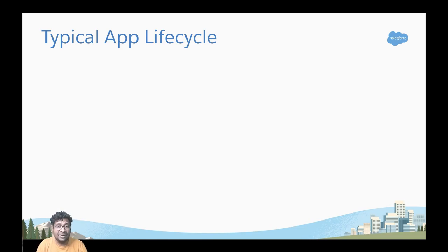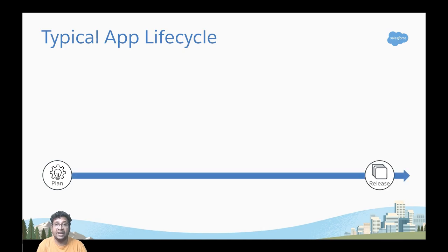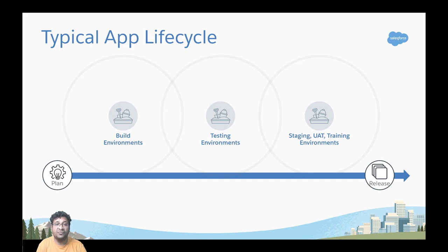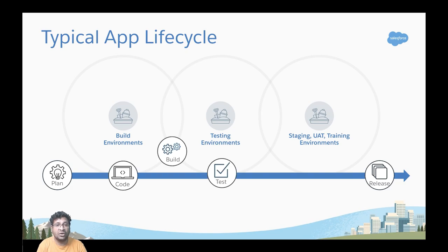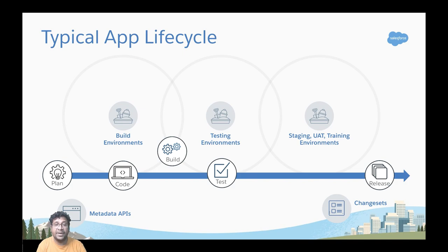In a typical app lifecycle, you start with a plan, build it, and release it. You work on different environments like build, testing, staging, and UAT before deploying to production. To move code between environments, you have various options including change sets, Metadata API, and the latest packaging models.